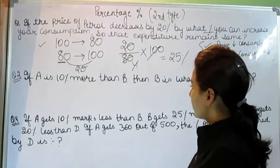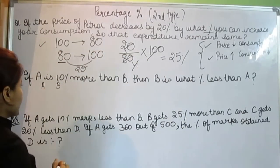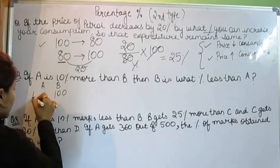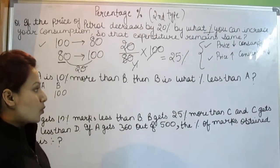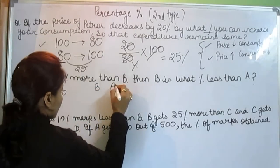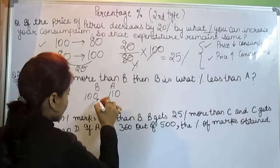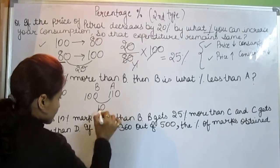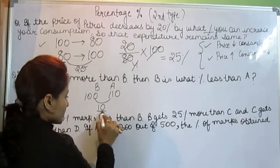Now the next question: if A is 10 percent more than B, let B be 100, so A would be 110. Now, B is what percent less than A? B is 100 and A is 110, so the difference is 10. B is 10 less than A, but this is not a percentage yet.